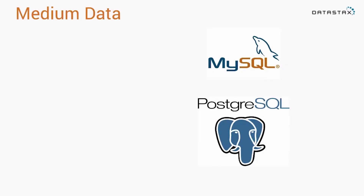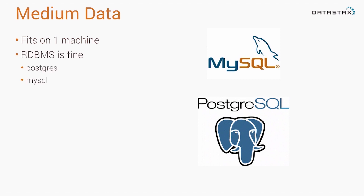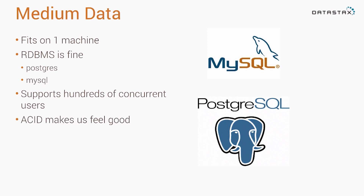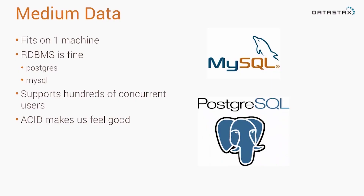Now let's talk about medium data. If you're a web application developer, this is probably the typical data set you're working with — data that fits on a single machine. You're probably using a relational database like MySQL or Postgres, and you can support hundreds of concurrent users. The nice thing about working with a relational database is these ACID guarantees — atomicity, consistency, isolation, and durability. As a developer, we've been taught for many years how to develop on top of these, so when I put data into a relational database, I know exactly what's going to happen.